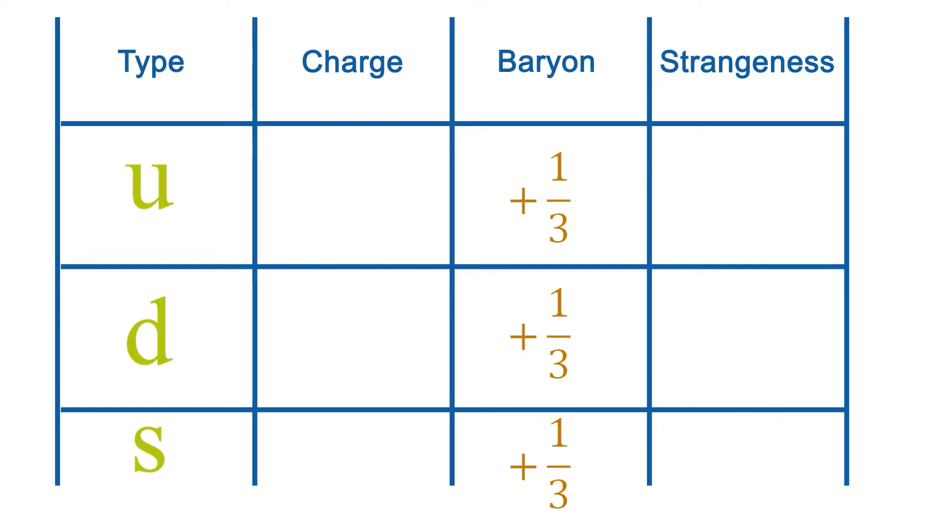The up quark has a positive charge of plus two thirds e, and both the d and s quarks have a negative charge of one third e. The up and the down both have a zero strangeness, whereas the strange particle, oddly perhaps, has a strangeness of minus one. For the antiquarks, all the signs change just like you'd expect.